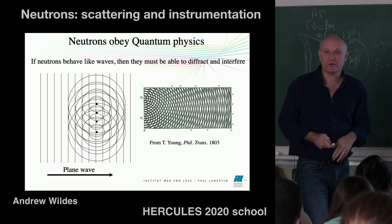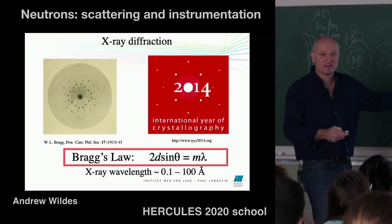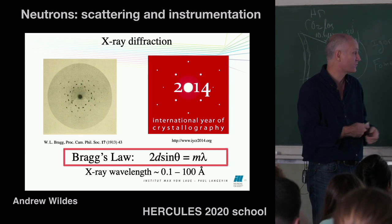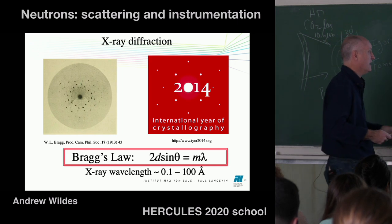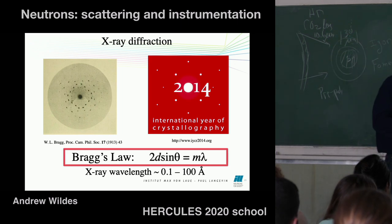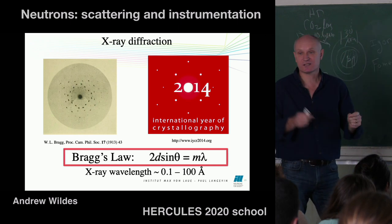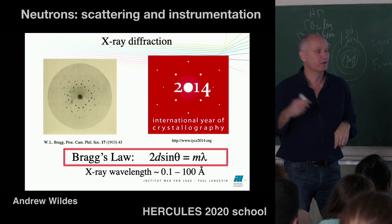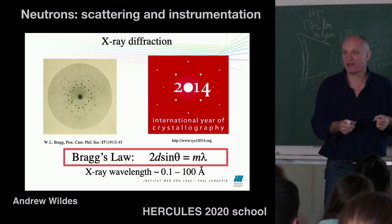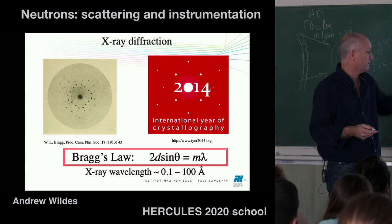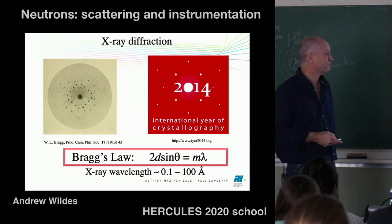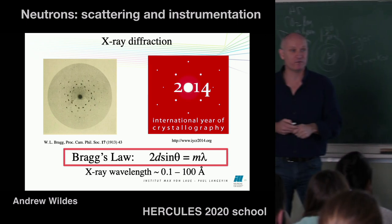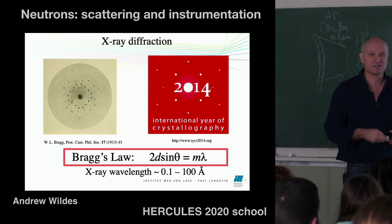It was then established that diffraction interference could be used to study crystals once x-rays were discovered. Bragg the Younger managed to observe Bragg spots from x-rays interacting with a crystal, allowing him to work out where atoms are inside the crystal — for which he received a Nobel Prize. This was celebrated 100 years later with the International Year of Crystallography, showing how powerful the technique is.